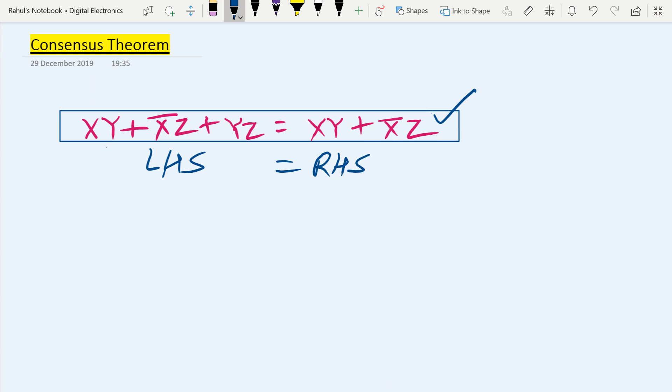So here we will prove this. Let's see: xy plus x prime z plus yz. Now I can write it like xy plus x prime z plus yz concatenate one. Then xy plus x prime z plus yz, and by using basic properties of switching algebra I can write one as x plus x bar.